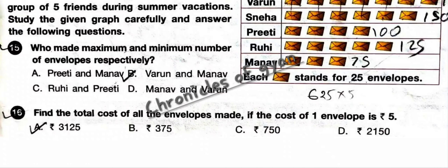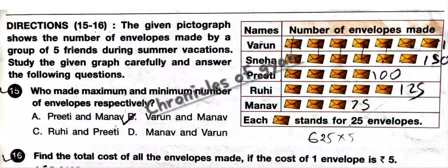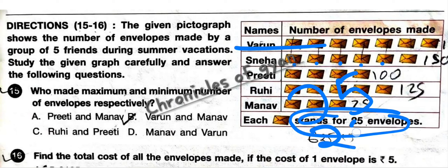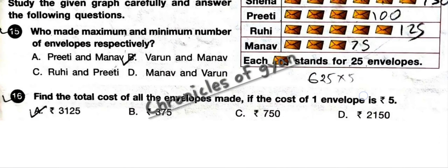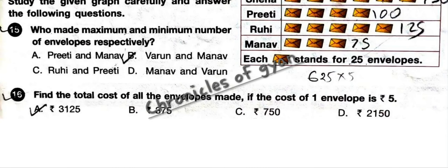Question 16: Find the total cost of all envelopes made if the cost of one envelope is Rs. 5. Total envelopes made by all friends: 7 + 6 + others = 25 total envelopes. Now 25 × 5 = 125. Then 625 multiplied by 5 gives 3125. The answer is option A: Rs. 3125.